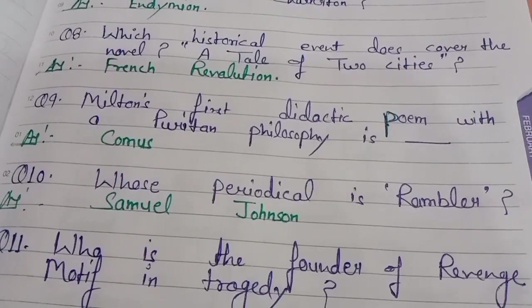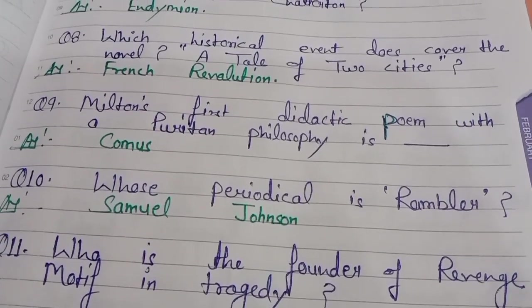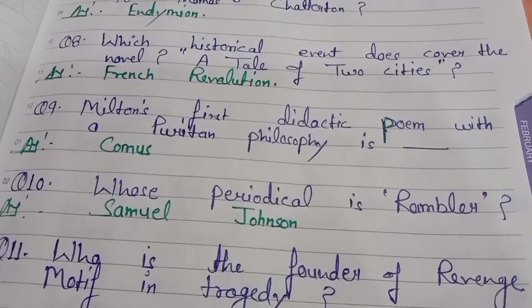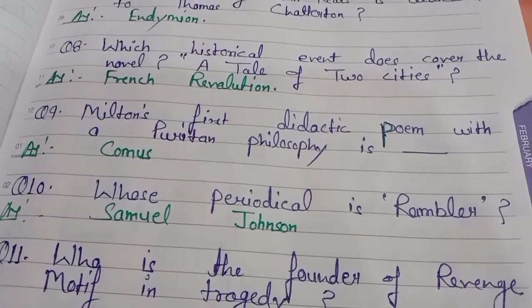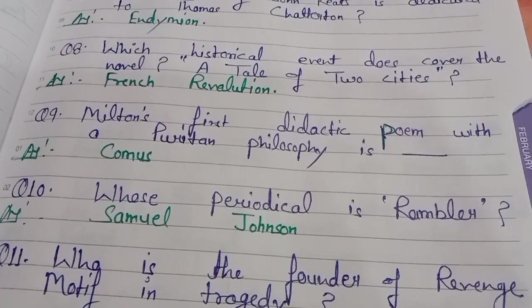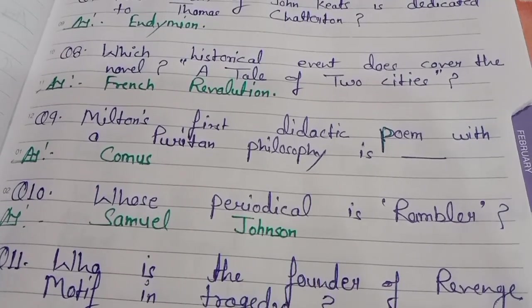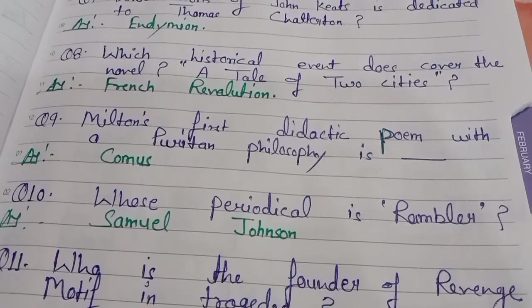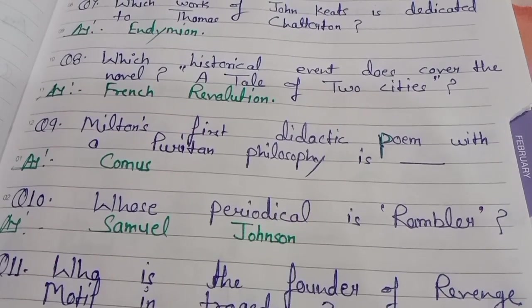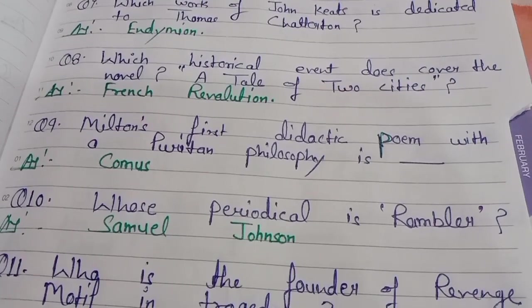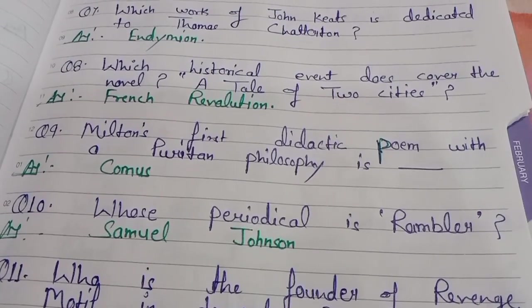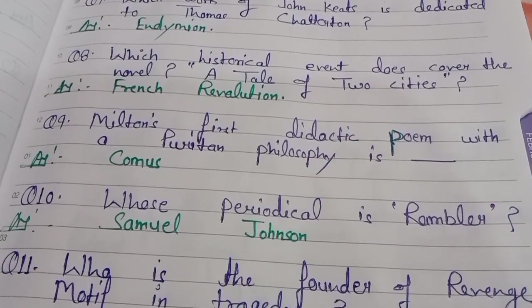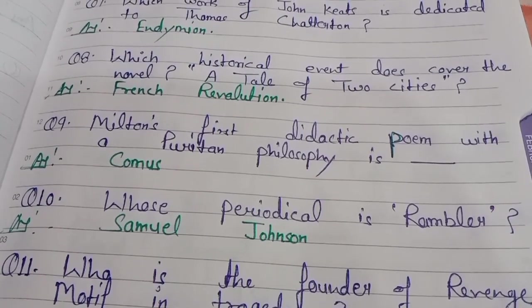Which historical event does the novel A Tale of Two Cities cover? A Tale of Two Cities is a historical novel by Charles Dickens, and it has been set against the backdrop of the French Revolution.